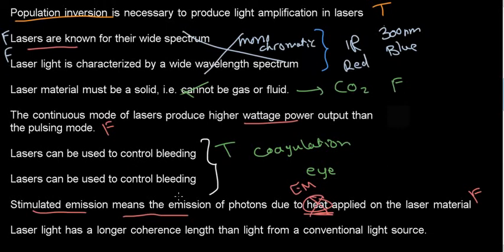Laser light has a longer coherence length than light from a conventional light source. And this right away should ring true because light is coherent through time and space more than conventional or spontaneous emission. So this should be true.